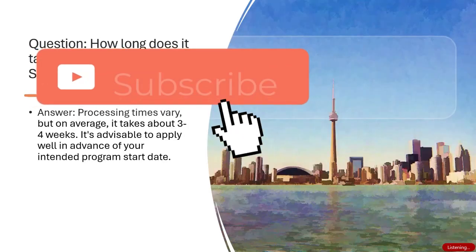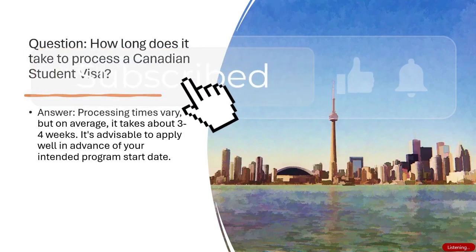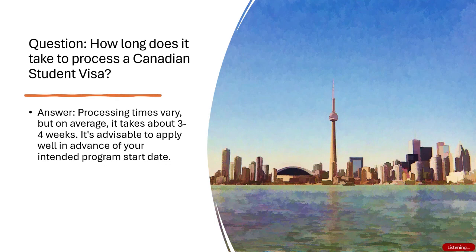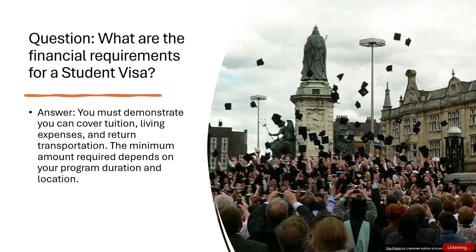Slide 4 — Processing Time Question: How long does it take to process a Canadian Student Visa? Answer: Processing times vary, but on average it takes about 3 to 4 weeks. It's advisable to apply well in advance of your intended program start date.